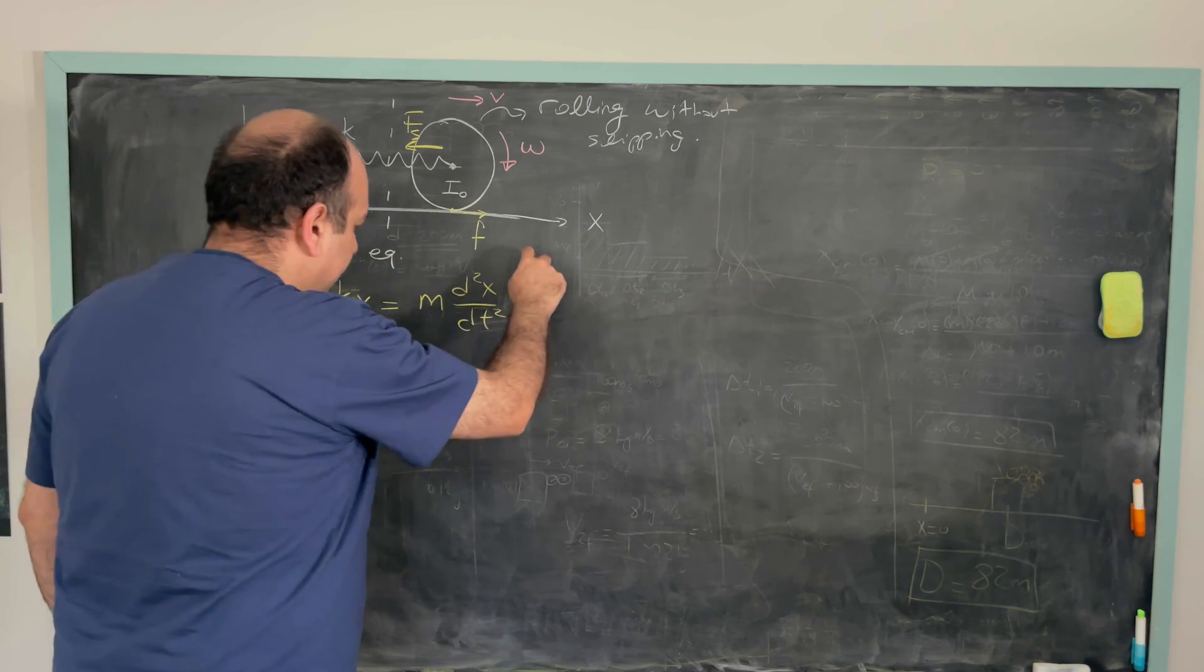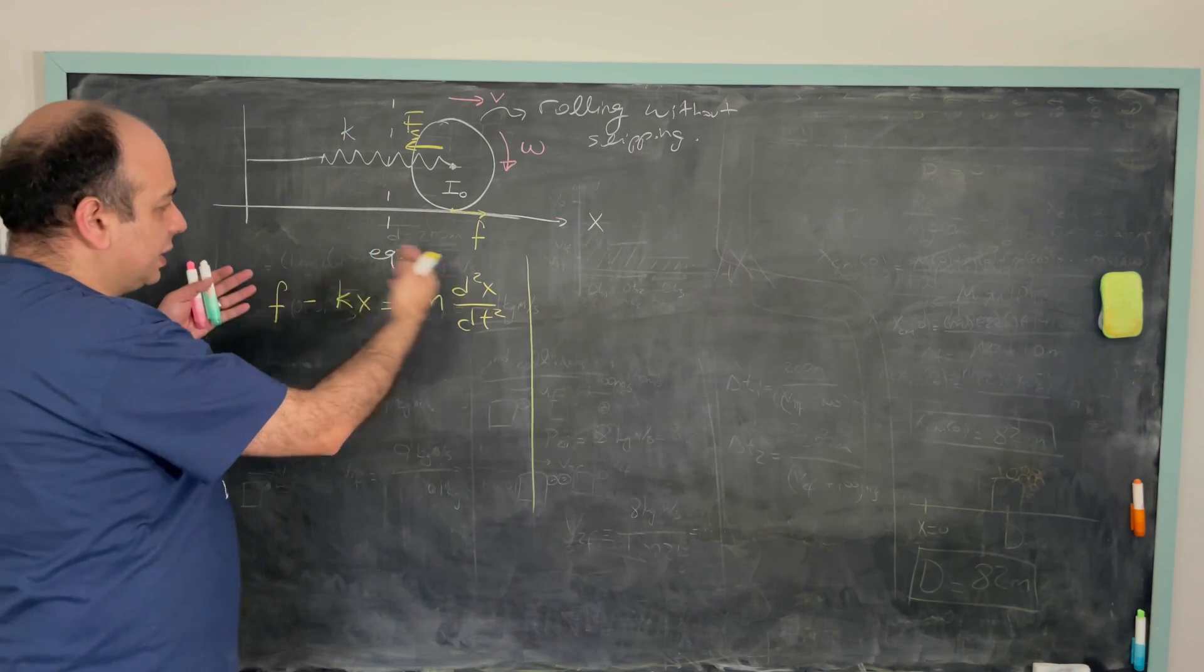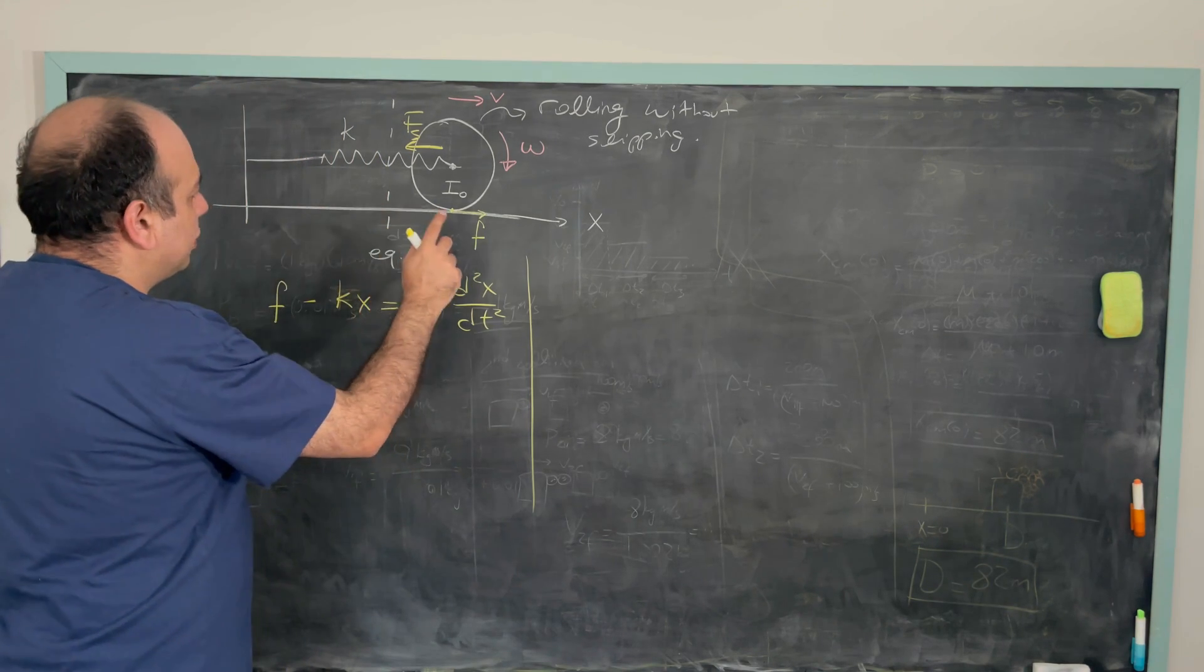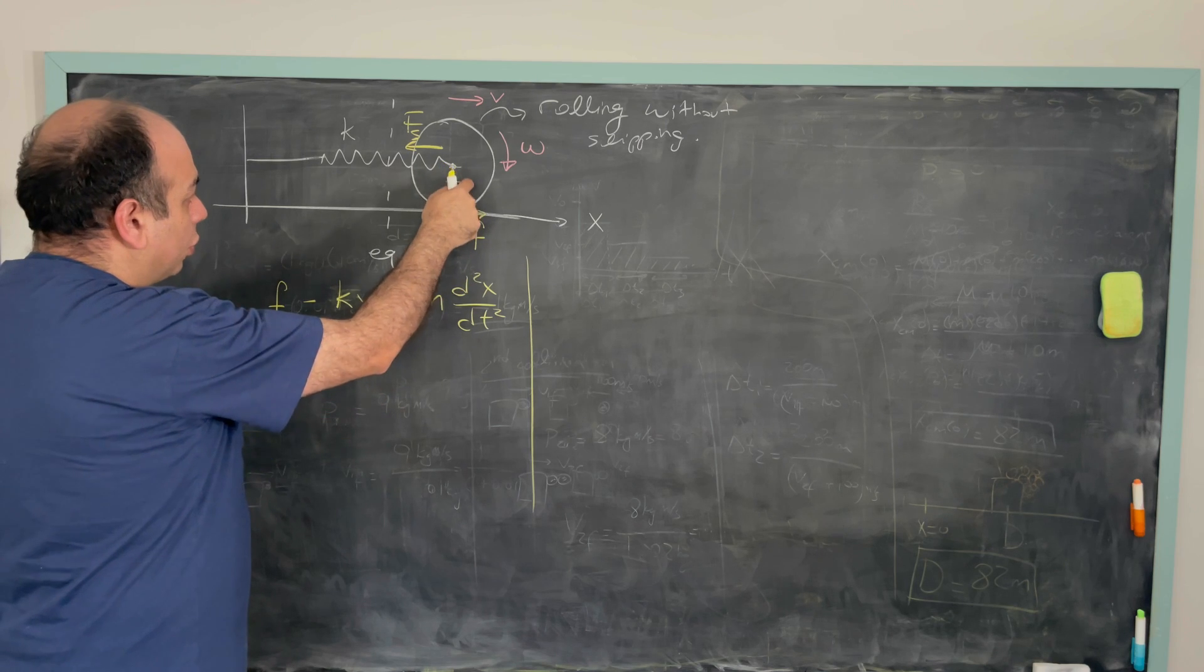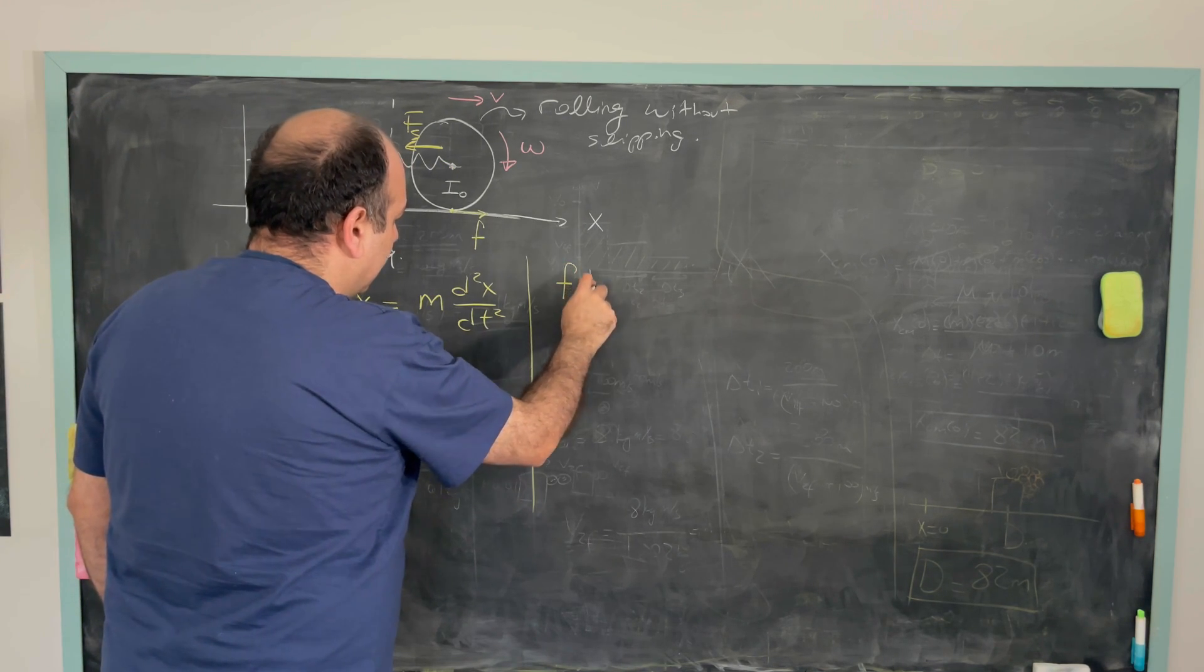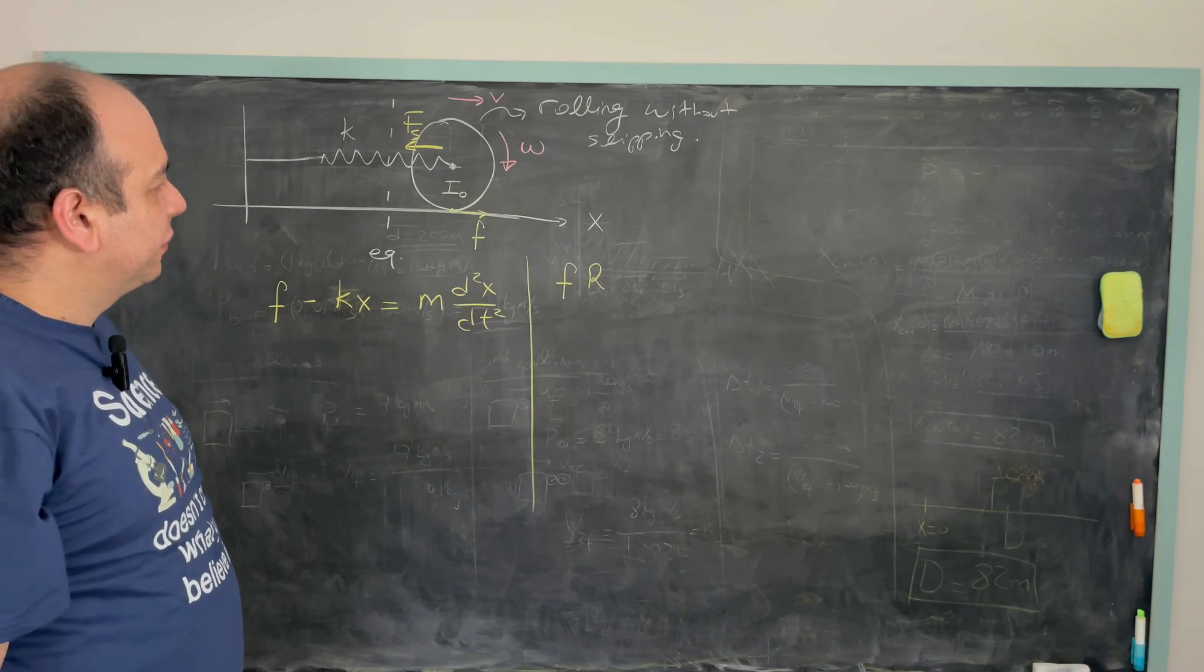Well, what happens to the rotation? So whenever we have a rolling motion, we look at the translational part and the rotation part separately. So there is only this force F which produces torque on this object. So F times R is the torque exerted by this force F, static friction.